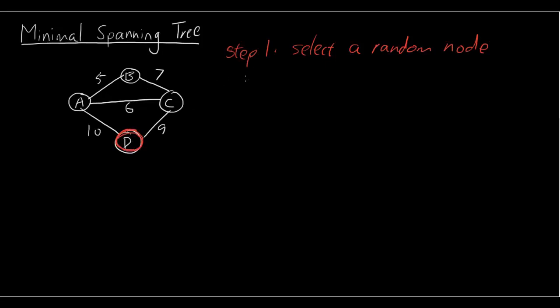Okay, step 2. So you connect this node to its nearest neighbor and we have C is the closest to D so we're going to connect C up to D so C and D are now connected.